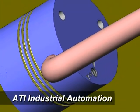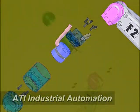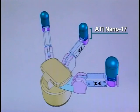ATI Industrial Automation's Nano 17 is a compact six-axis force torque sensor that can be customized to mount in each finger of the Barrett hand.